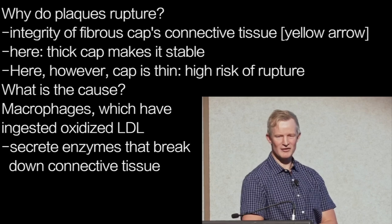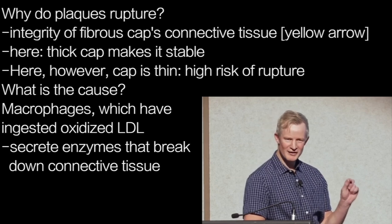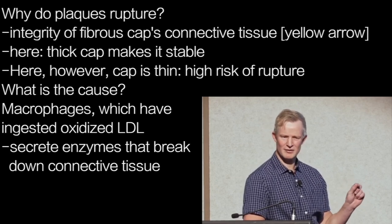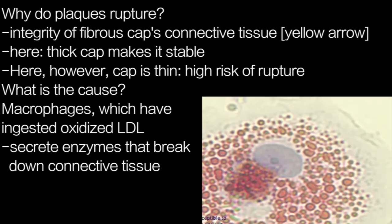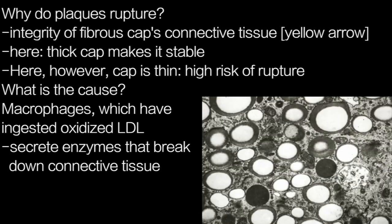The question is what causes the fibrous cap to thin out? The answer comes back to foam cells — the macrophages that have ingested the oxidized LDL. After ingesting oxidized LDL, foam cells secrete enzymes that break down connective tissue and break down the protective cap over the atherosclerotic plaques.